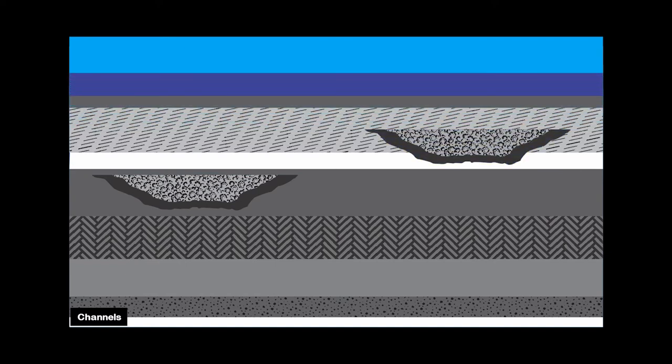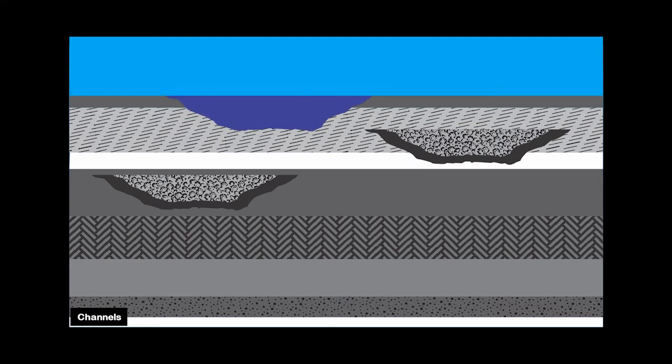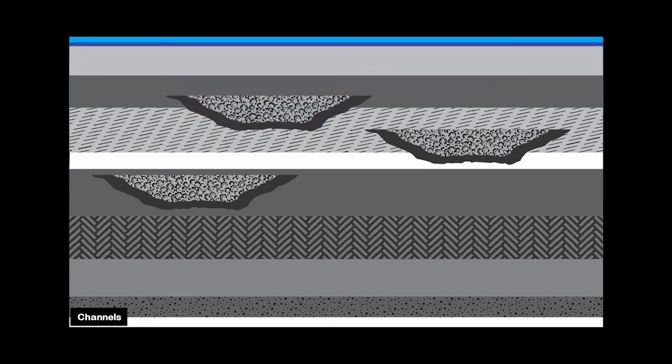Now in cross-sectional view, channels will cut through different layers within a normal conformable sequence. The channels will then fill in over time with sands and silts. Sediments will continue to deposit with channels cutting through and across different layers. Finally, with proper conditions, hydrocarbons will accumulate within these stratigraphic traps.